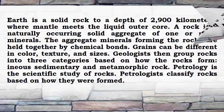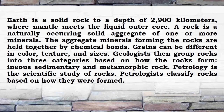Earth is a solid rock to a depth of 2,900 kilometers, where the mantle meets the liquid outer core. A rock is a naturally occurring solid aggregate of one or more minerals. The aggregate minerals forming the rocks are held together by chemical bonds. Grains can be different in color, texture, and sizes. Geologists group rocks into three categories based on how they form: igneous, sedimentary, and metamorphic rock.